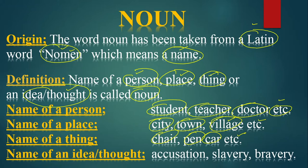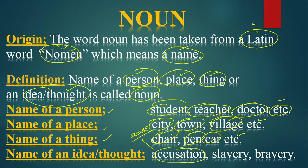The fourth category is the name of an idea or thought, which is totally different from the first three. An idea or thought is only felt and observed — you cannot see it or touch it. There is only a feeling, a sort of mood or observation. We will discuss its kinds when we start the noun types. An example of the name of an idea or thought is 'accusation.'